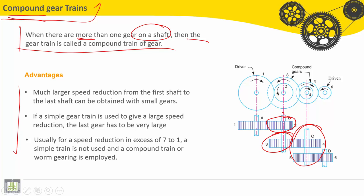Some advantages to the compound gear trains: much larger speed reduction from the first shaft to the last shaft can be obtained with small gears. If a simple gear train is used to give a large speed reduction, the last gear has to be very large.